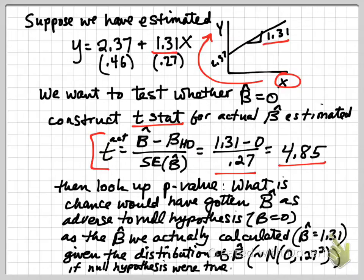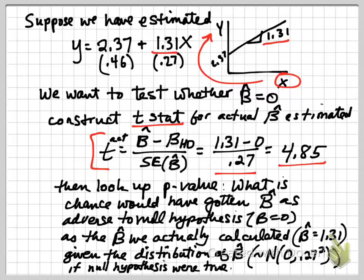We now look up the p-value for 4.85. We look at the standard normal distribution to find the probability that we would have gotten an estimated coefficient as adverse to the null hypothesis — that β equals 0 — as the β̂ we actually calculated, which was 1.31. This is given that β̂ is distributed normally with mean 0 and variance 0.27 squared, assuming the null hypothesis were true.